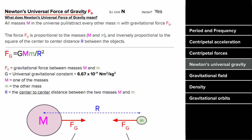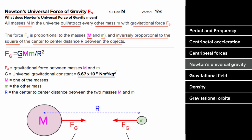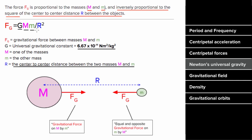Newton's universal law of gravity states that all masses in the universe attract every other mass with gravitational force. This force is proportional to each mass, and inversely proportional to the square of the center-to-center distance between the two masses. In mathematical form, the force of gravity equals big G — a constant of 6.67 times 10 to the negative 11th — multiplied by each mass in kilograms, divided by the center-to-center distance squared (not the surface-to-surface distance, but the center-to-center distance).